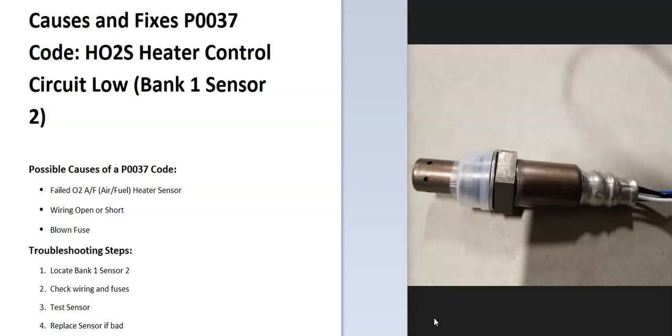Today I'm talking about a P0037 code, what it is and how you go about fixing it. So what is a P0037 code? It's an HO2S heater control circuit low bank one sensor two.